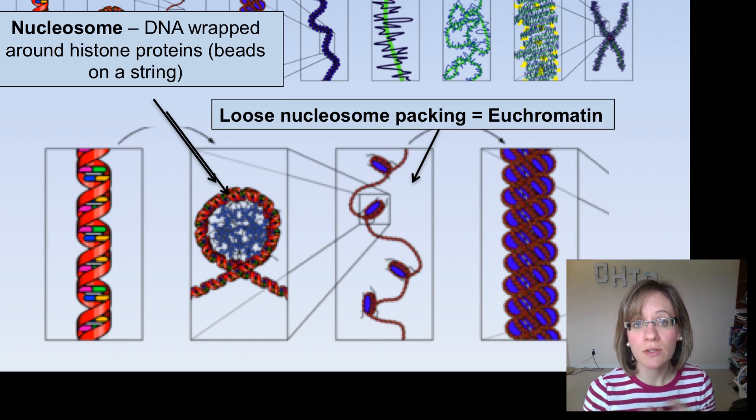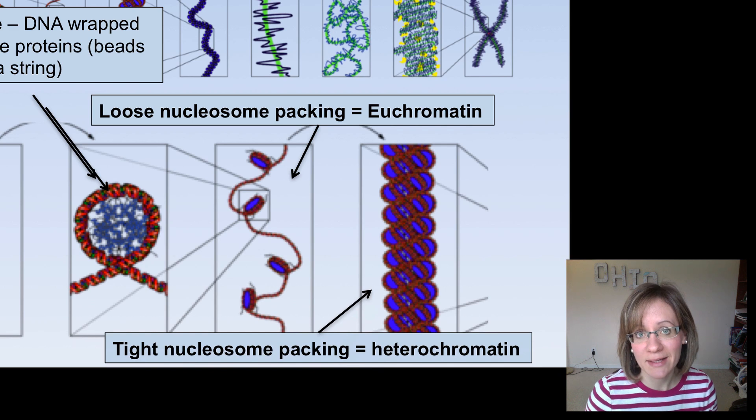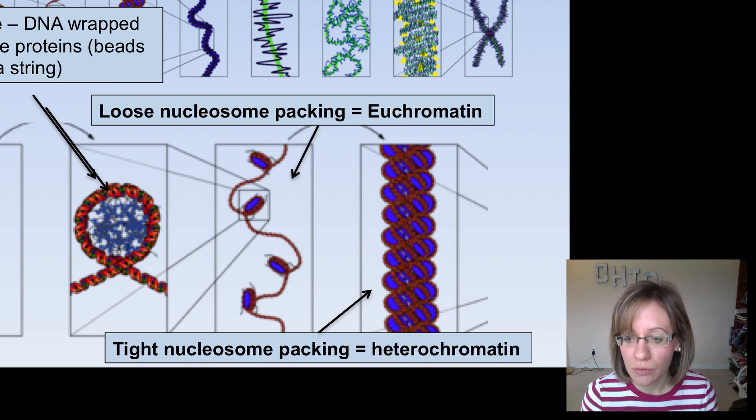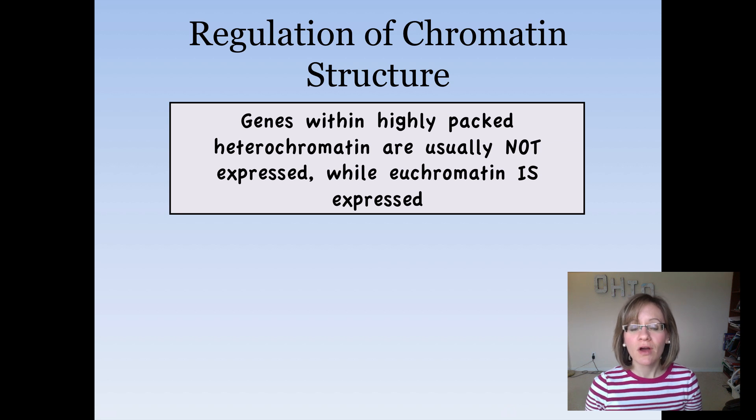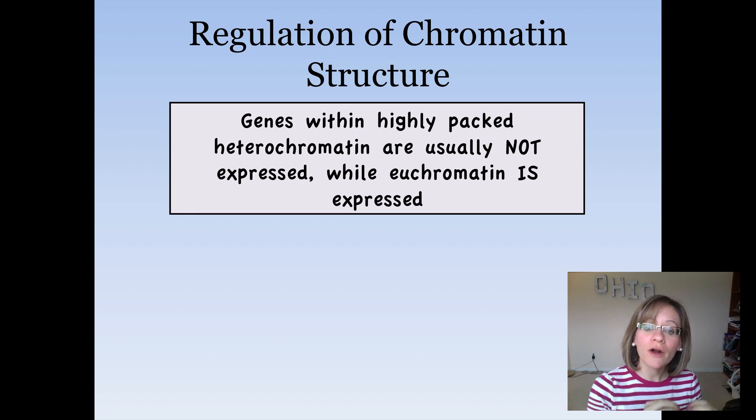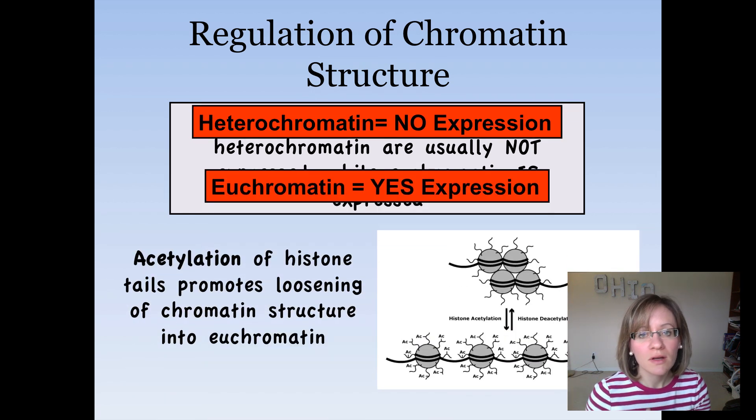Now these nucleosomes can be loosely packed together and this is called euchromatin or they can be tightly packed together and this is called heterochromatin. Now I'm making this differentiation because it's important. So we can regulate chromatin structure. Genes that have highly packed heterochromatin are usually not expressed because they're so tightly packed, RNA polymerase cannot get in there and it cannot read that DNA. While euchromatin, the loosely packed, RNA polymerase can get in there and so it is expressed. So just to review, heterochromatin, little expression, euchromatin, yes expression.